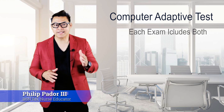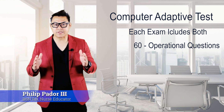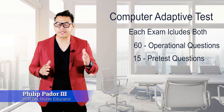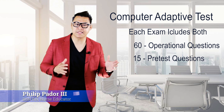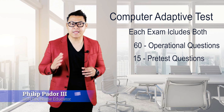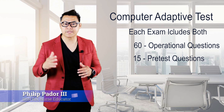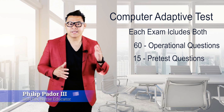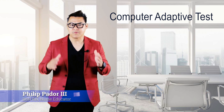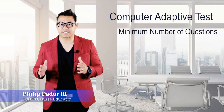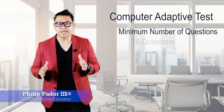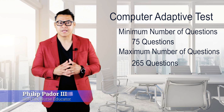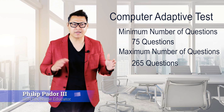Each exam includes both 60 operational questions — the actual questions used to determine competency — and 15 pre-test questions, which are questions being tested for use on subsequent exams. The pre-test questions are administered during the early part of the exam, but you will not be able to differentiate pre-test from operational items. All candidates must answer at least 60 operational test questions, making the minimum number of questions 75 (60 operational plus 15 pre-test). The maximum number of possible questions is 265 (250 operational plus 15 pre-test). Most candidates receive about 110 to 130 questions.